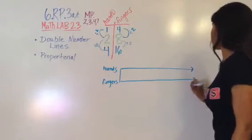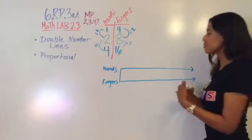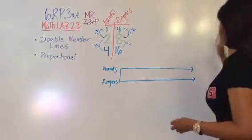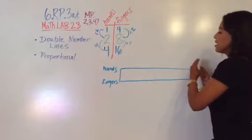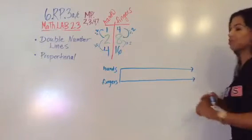And that can help us solve other problems that maybe use larger numbers instead of continuing our table using addition. Now we're going to take that idea and apply it to a double number line. So what we're going to do is I'm going to draw a horizontal line and another horizontal line. So I'm going to draw two. And hence the word double. We have one unit, we're looking at hands. And the other, we are looking at fingers.